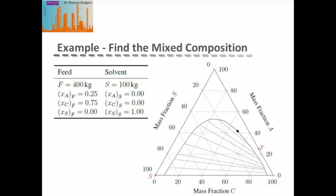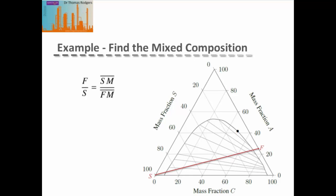We know that our mixing point must lie on a straight line between these two points. As we know the flow rate of the feed and the solvent, we can use the version of the lever arm rule that relates the ratio of the feed-to-solvent flow rates to the length of the line from the solvent point to the mixing point and the feed point to the mixing point. Our feed is 400 kg and our solvent is 100 kg, so this gives us a ratio of 4. Therefore, the length of the line between the solvent and the mixing point must be 4 times that of the length of the line between our feed point and our mixing point.